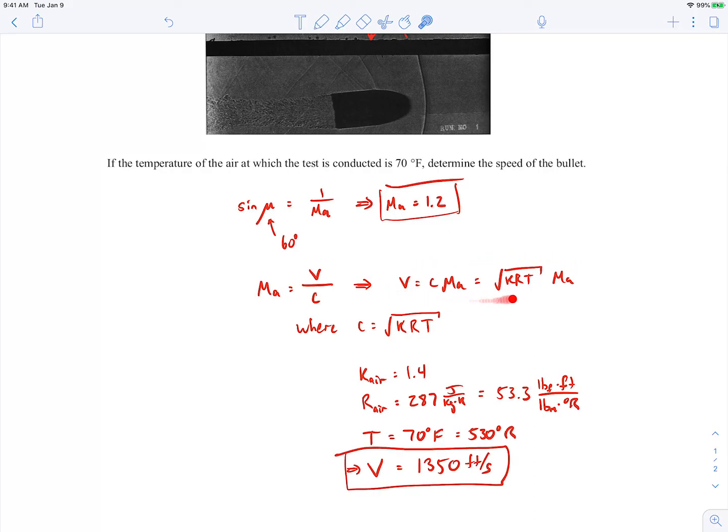So I just used this relation up here, and the velocity is equal to the speed of sound times the Mach number, the speed of sound is equal to the square root of krt, and that's how I ended up with the velocity. So that's all there is to it. So we'll end the example there.